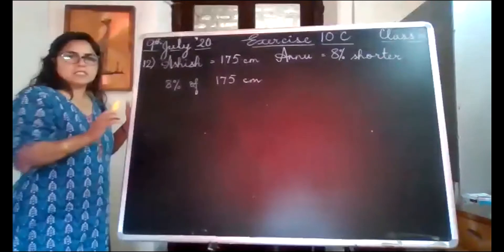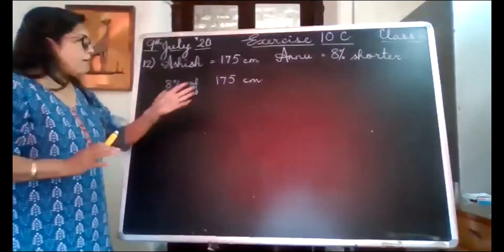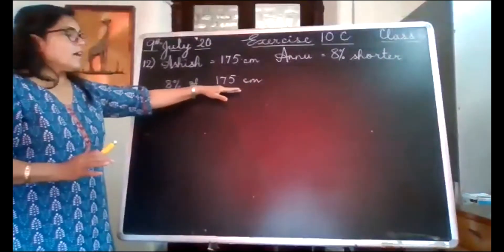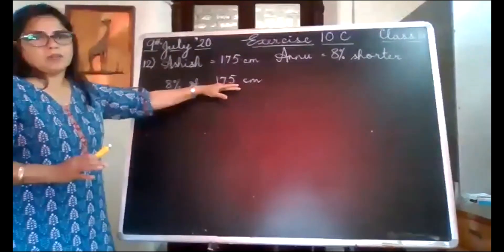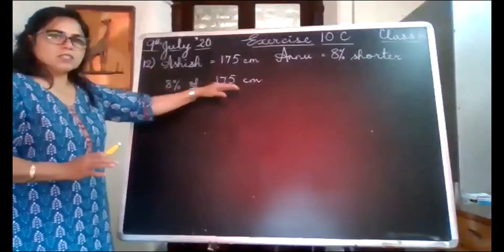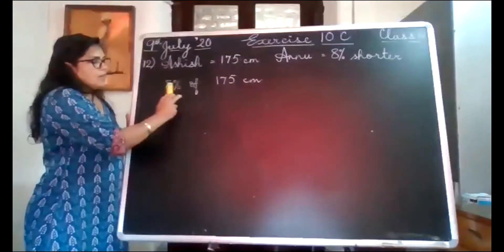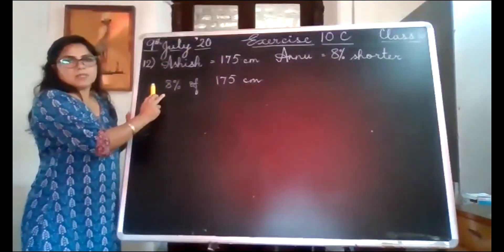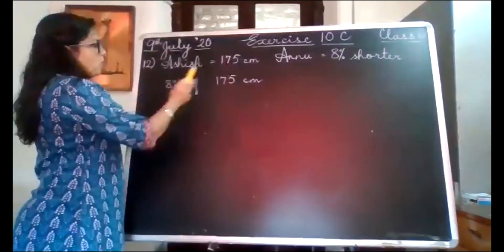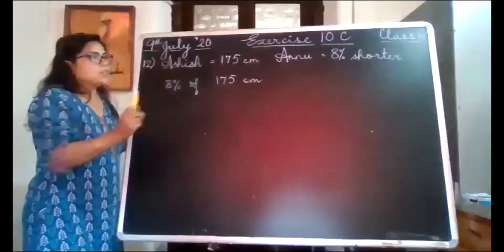Whenever the percentage is given, it is very easy for us to find the value as long as we know the total. Only when the total is missing, we cannot make use of this percentage. But in this case we know 8% of what she is shorter.